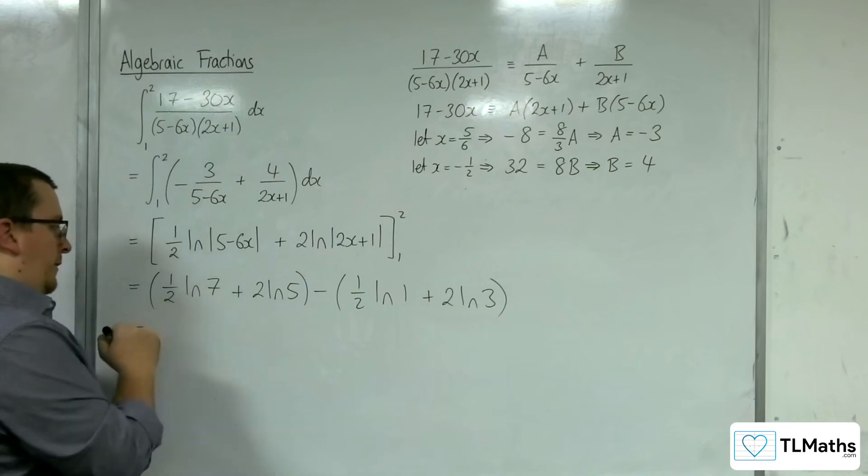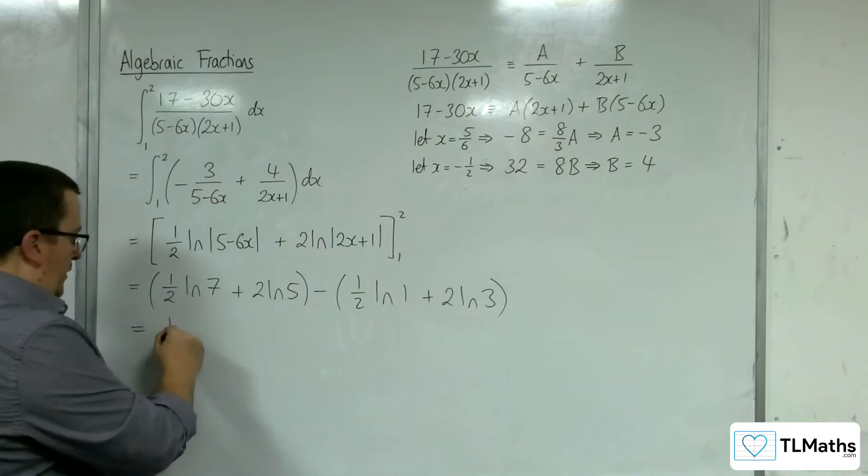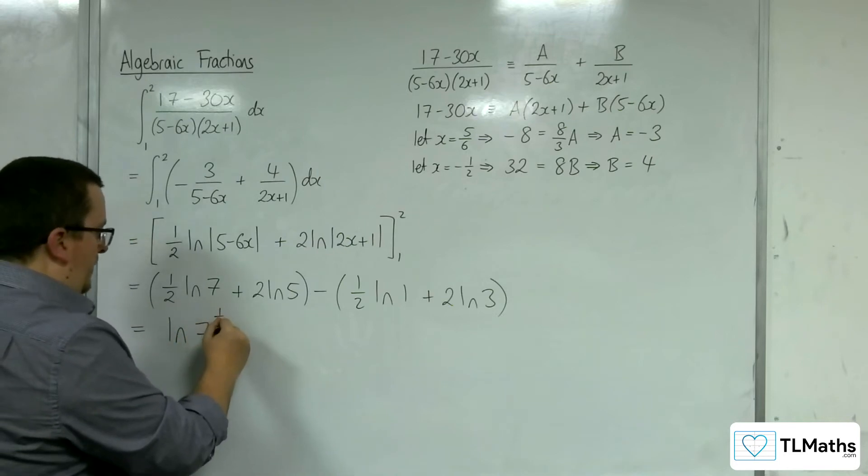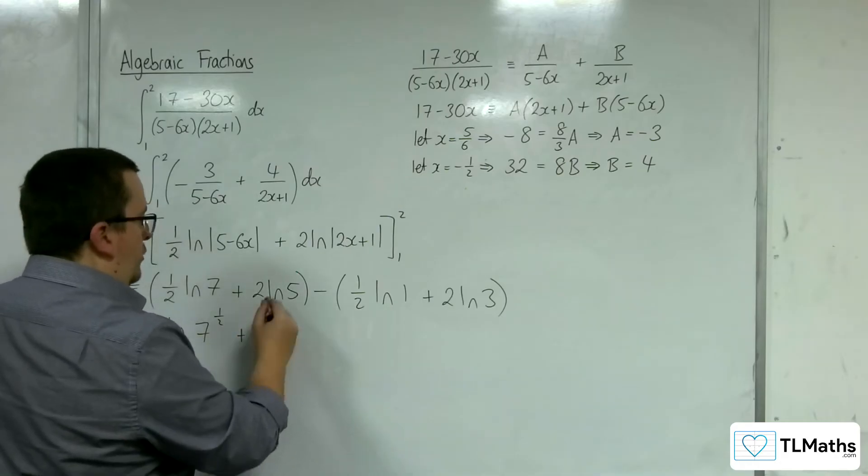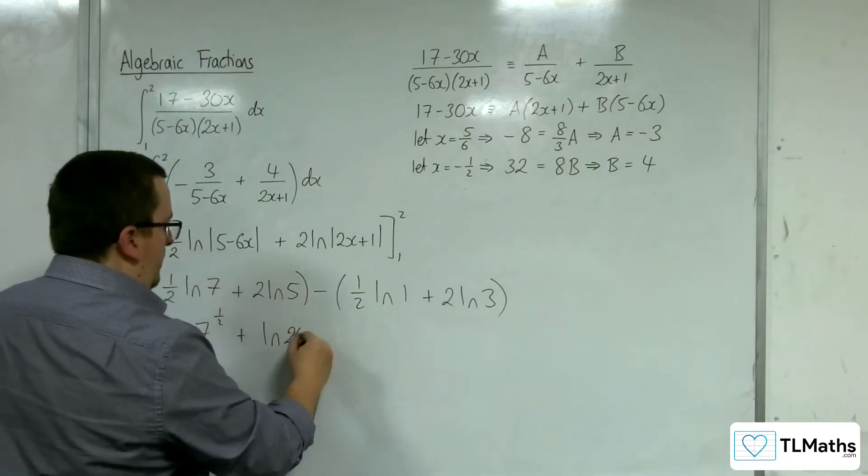So, we've got the half going up to the power of 7. So, log of 7 to the half plus log of 5 squared, so log of 25.